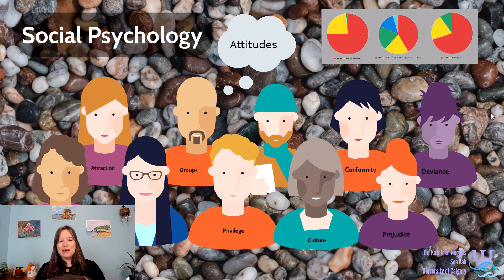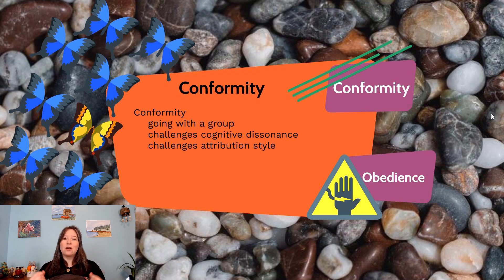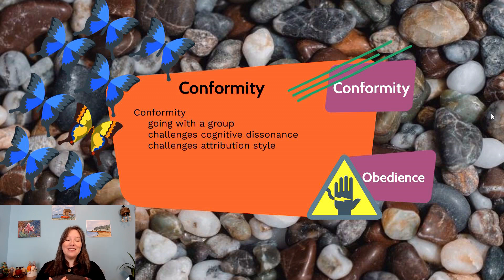In addition to just these basic group dynamics, a lot of this has to play out because of the phenomenon known as conformity. Conformity is the idea that you are going to go with the group — you'll do everything you can to blend in and fit in with others. This means you will conform even if it challenges you and creates cognitive dissonance, and you'll go with the group even if it challenges your attribution style, even if you believe something was internal or external, or positive or negative, and you will change your attitudes and attributions just to fit in with the group.